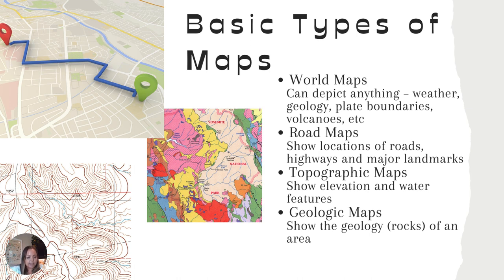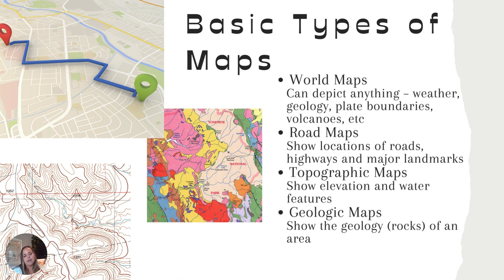Specifically in geology, we also have another type of map called a geologic map. This shows us the geology of an area — different colors representing different types of rocks. A lot of times these are projected onto a topographic map, so you not only see the geology but also the elevation it's occurring at. But mostly we're focusing on topographic maps today.